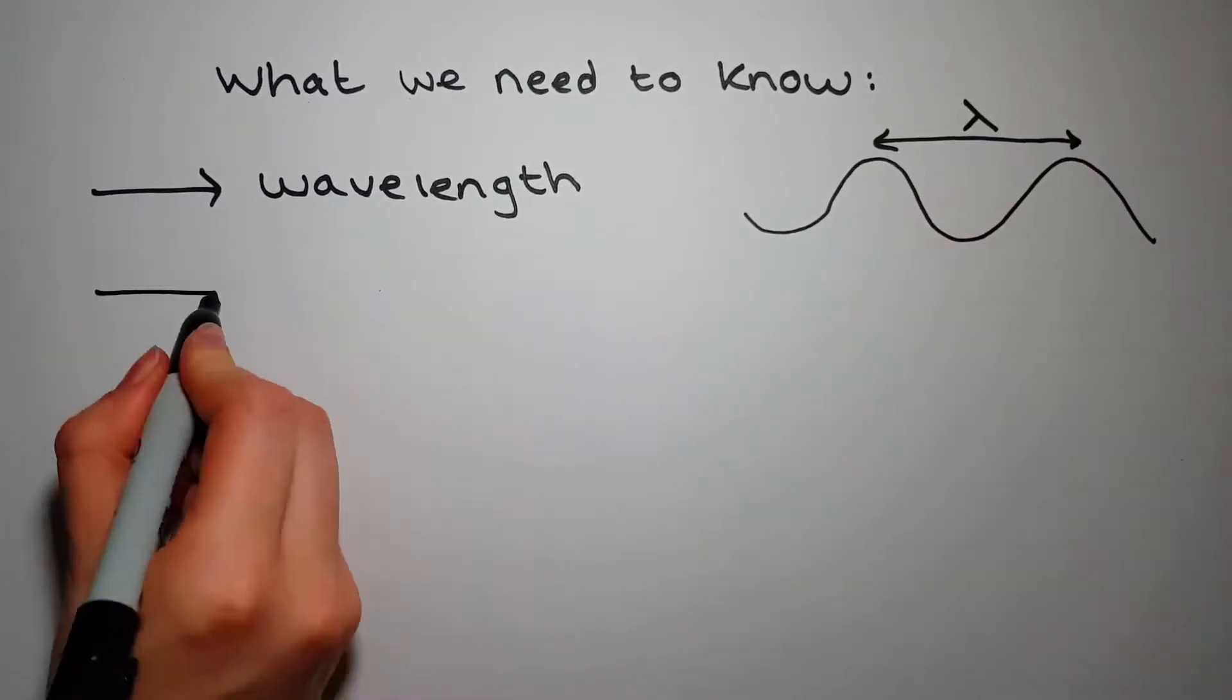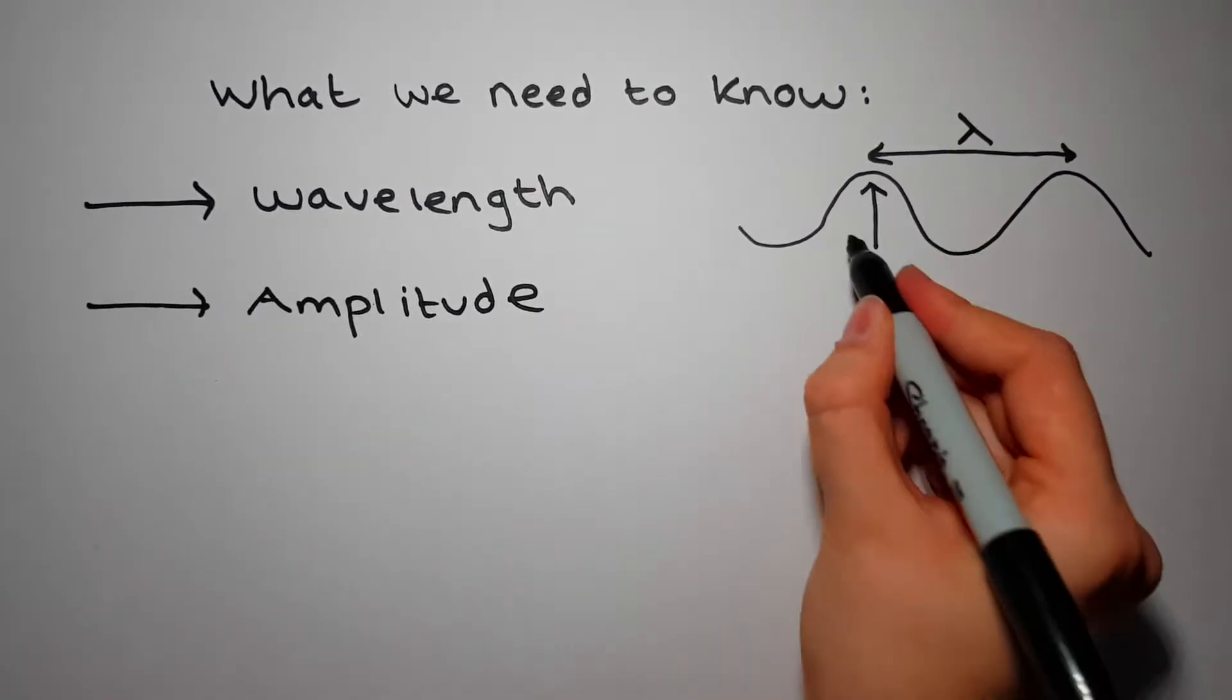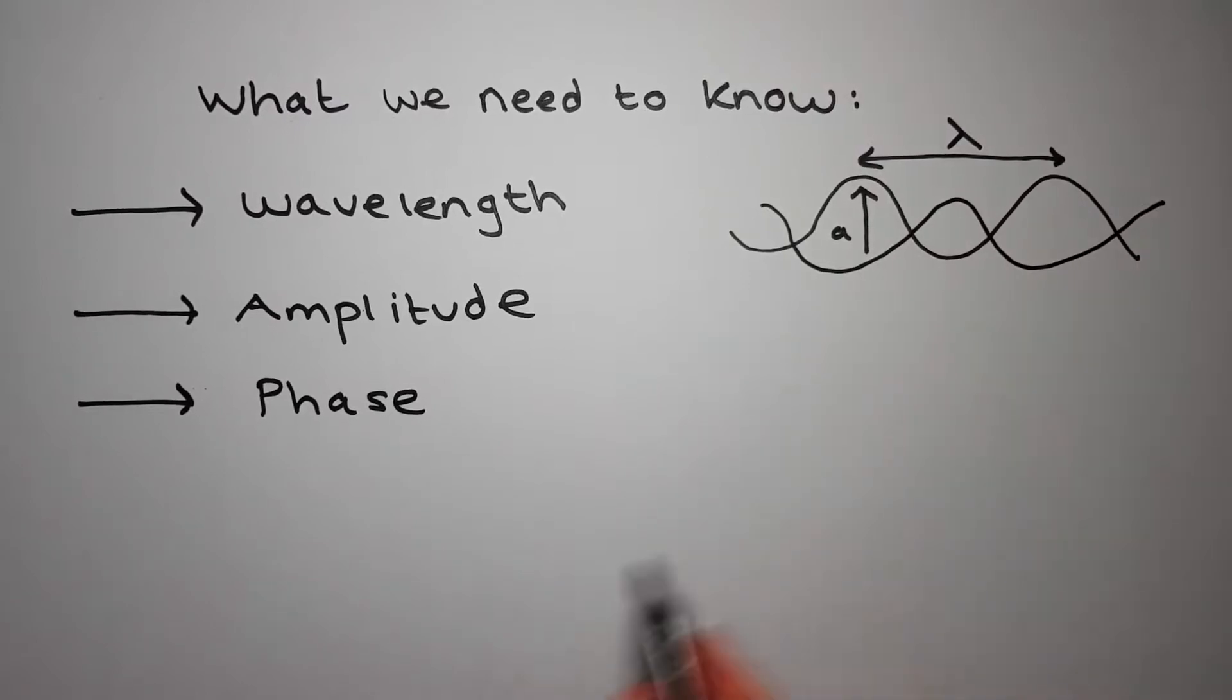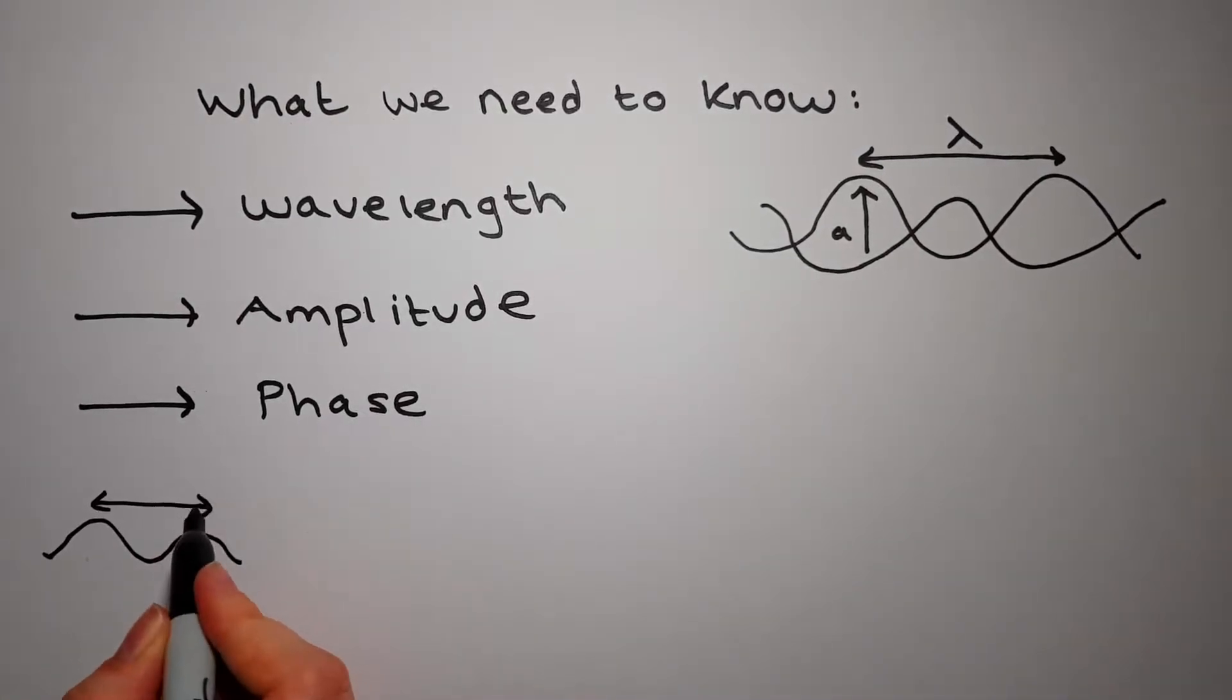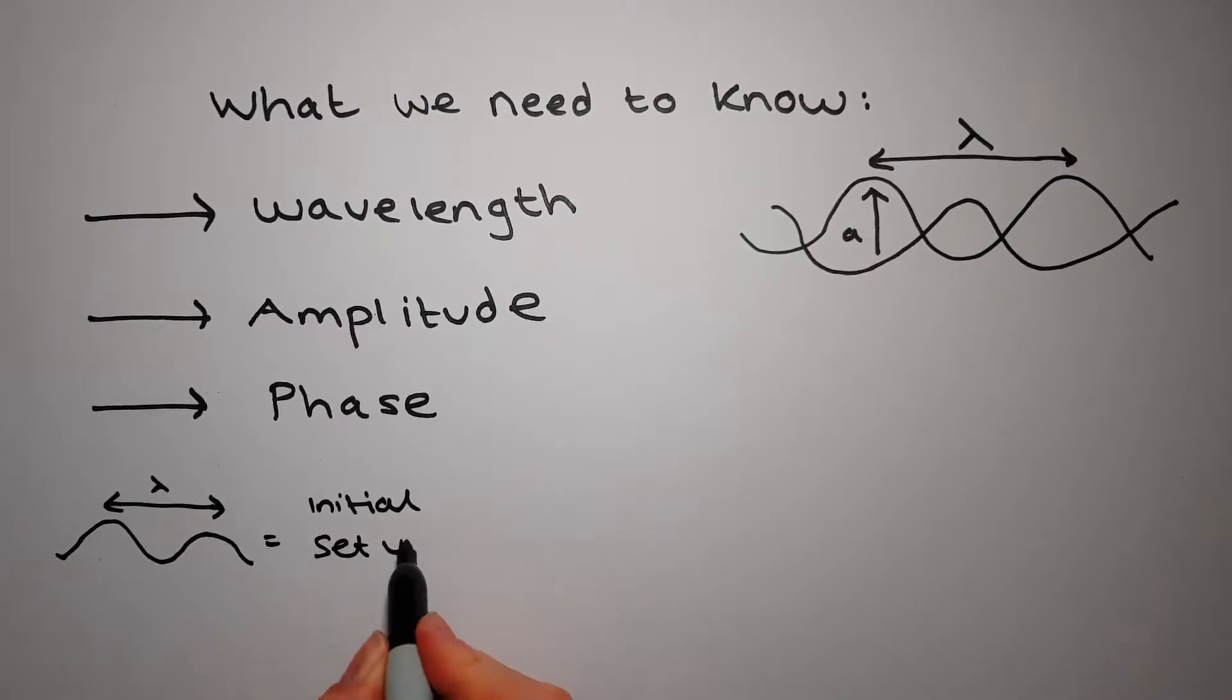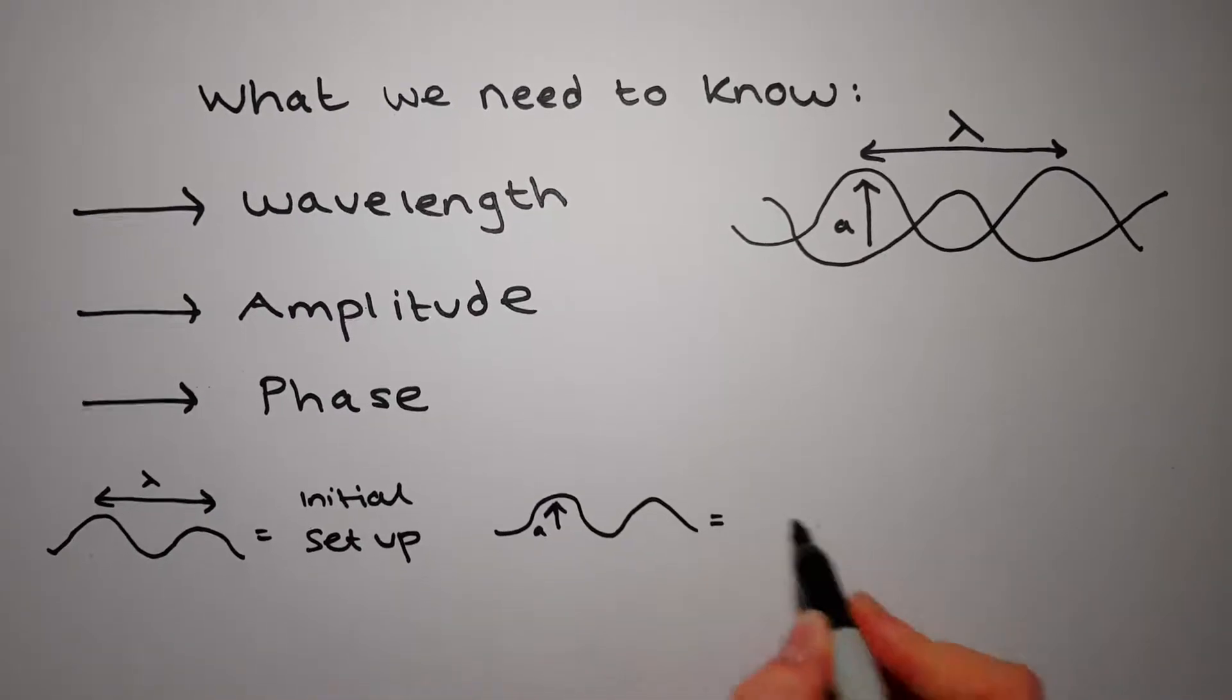This includes the wavelength, amplitude, and phase. The wavelength is known from the initial experimental setup, and amplitude can be determined from spot intensities.